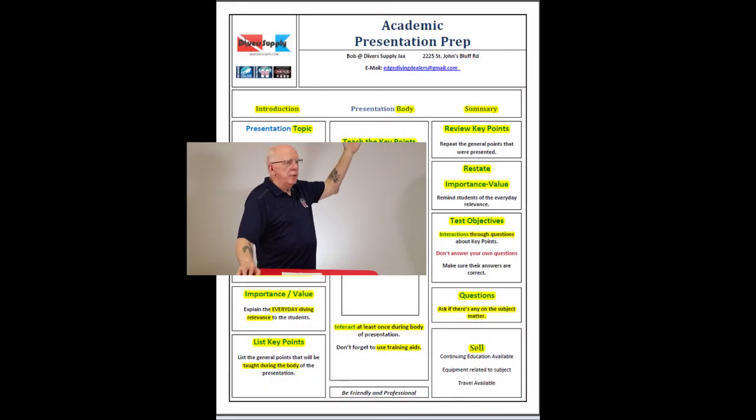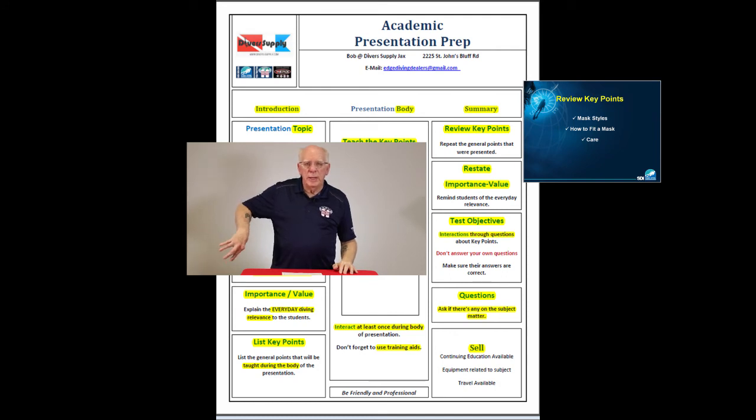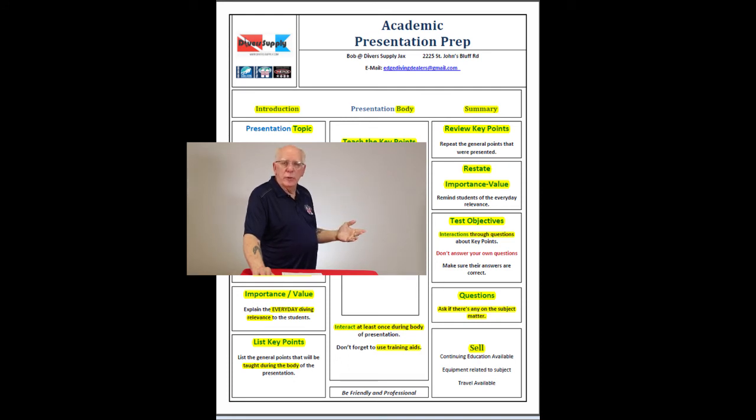Now we're going to move over here. This area is our summary. And the first thing in our summary is we're just going to review key points. Now, when we review these key points, all we're going to do is reach right down here and take these key points, move them right up over here and add the word review key points. And there are the key points. And all you have to say is to review the key points. We talked about styles of masks. We talked about fitting a mask. We talked about care of a mask. Don't start reteaching.